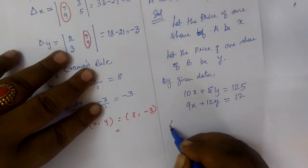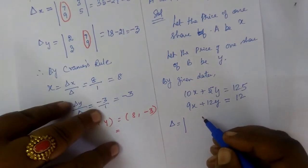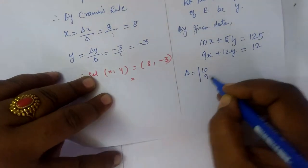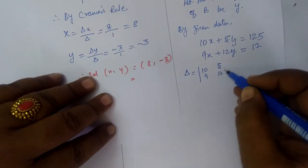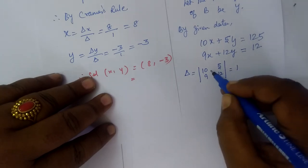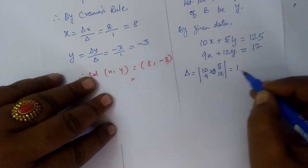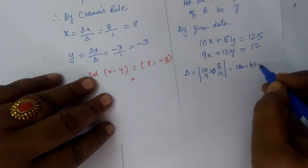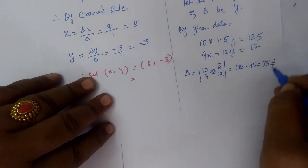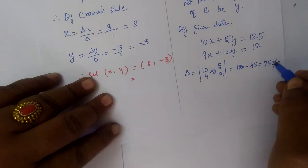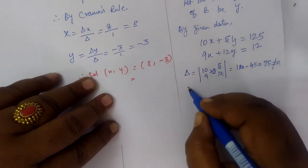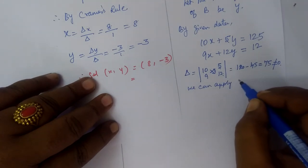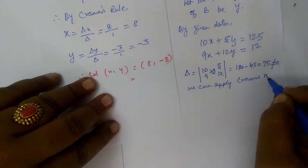Now, we calculate delta, the determinant. We collect the coefficients: 10 and 9 for X, 5 and 12 for Y. Delta equals cross multiply: 10 into 12 is 120, then 9 times 5 is 45, giving 75. Not equal to 0, so we can apply Cramer's rule.